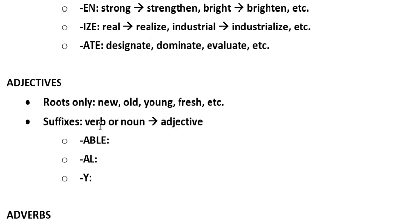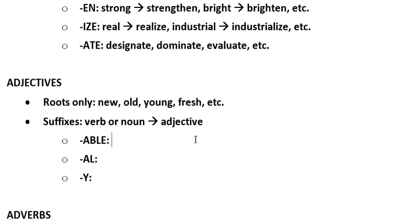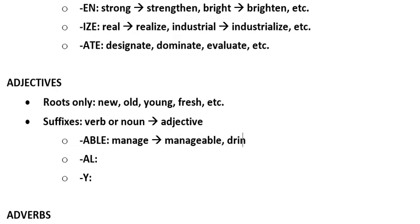As for adjectives, some are root-only words such as new, old, young, fresh — no affixes. But we can derive adjectives from either verbs or nouns. Something like manage, the verb, to manageable. And drink to drinkable. I'm sure you can think of many more.